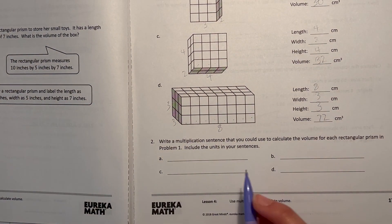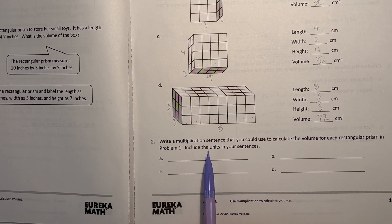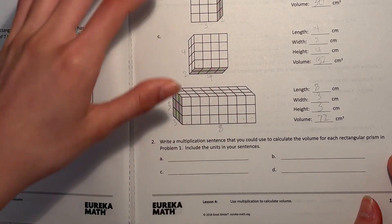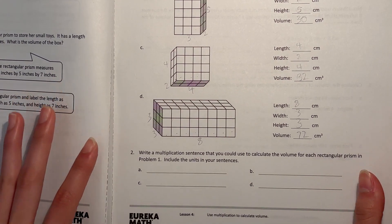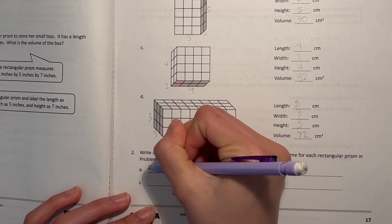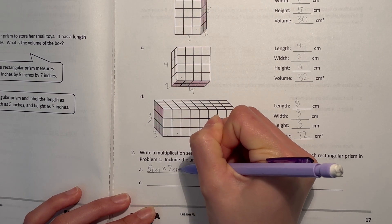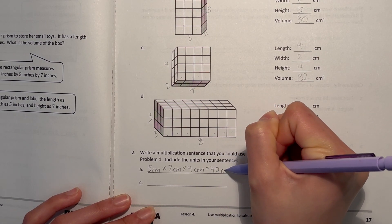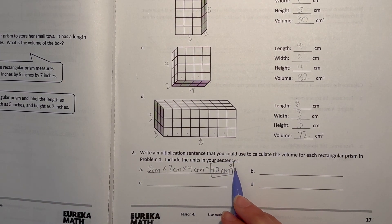Number two: write a multiplication sentence that you could use to calculate the volume for each rectangular prism in problem one. Include the units in your sentences. This basically tells us to rewrite. So A, the length was five, width was two, and height was four. That's five centimeters times two centimeters times four centimeters, that's 40 centimeters cubed. It's really important to include that in your answer when we're doing volume—it's cubed.